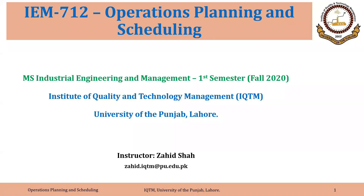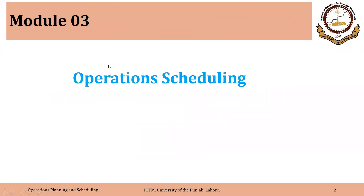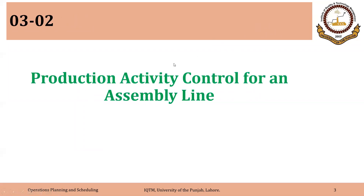As-salamu alaykum and welcome to another lecture on operations planning and scheduling. We are on module three, focusing on operation scheduling. In the last three lectures, we discussed operation scheduling for the jobbing process or job shops and batch process. Today, we will be discussing operation scheduling or production activity control for an assembly line.